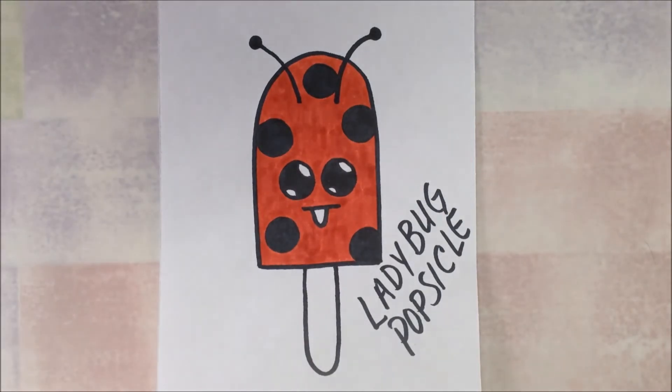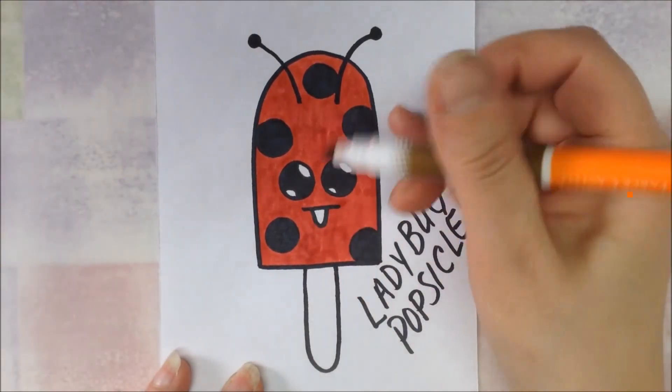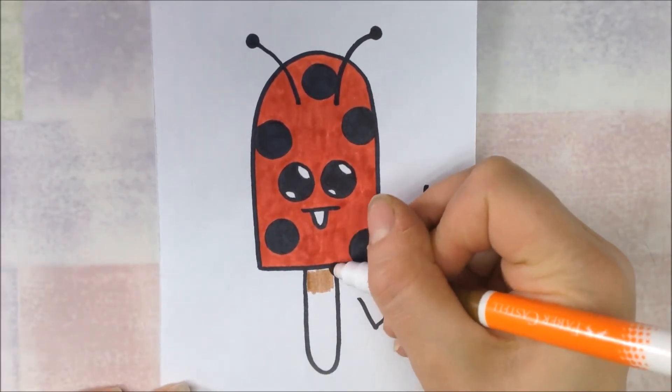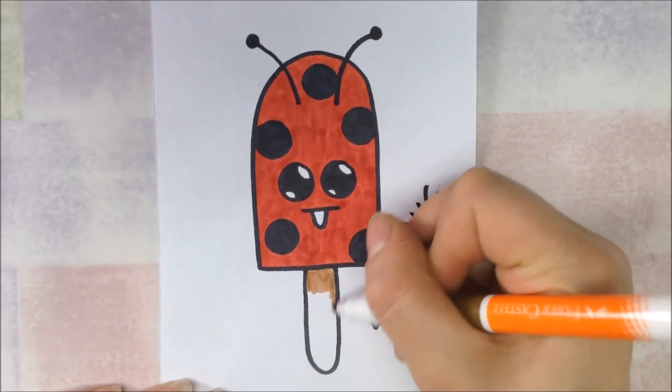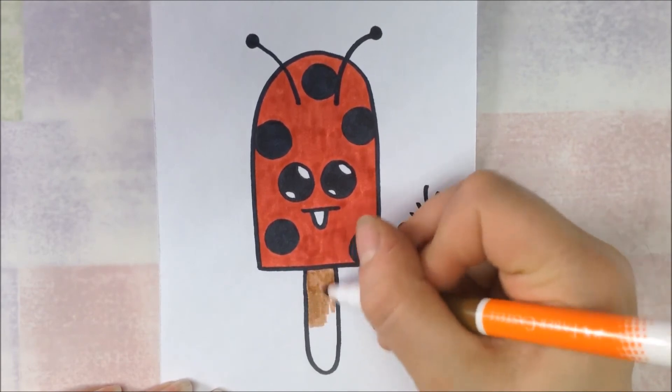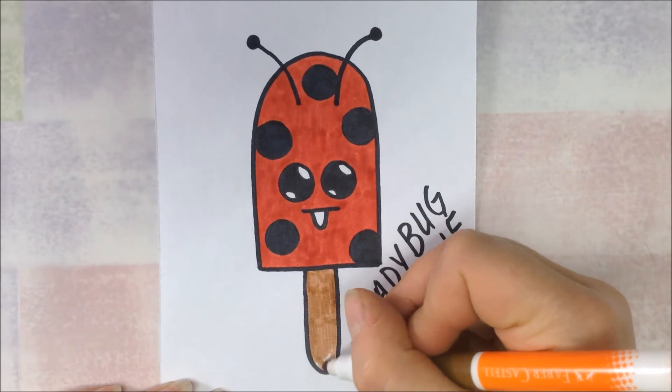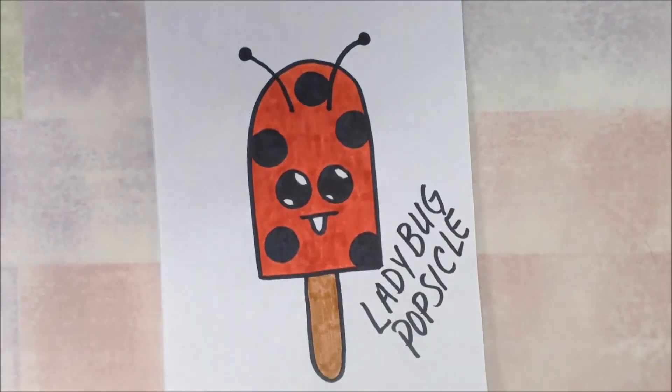So like I said before, a brown marker for the stick. And now your ladybug popsicle is done.